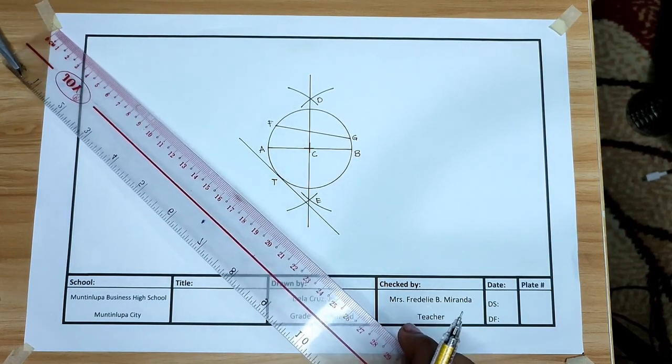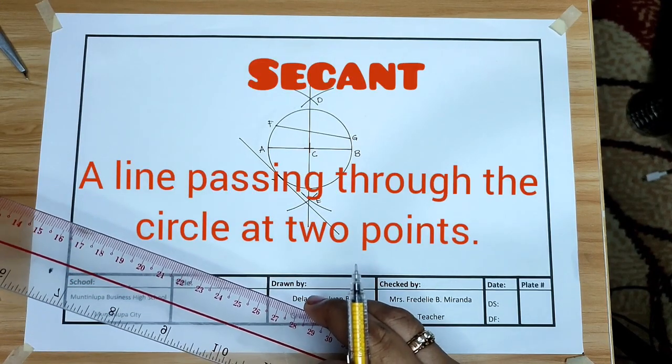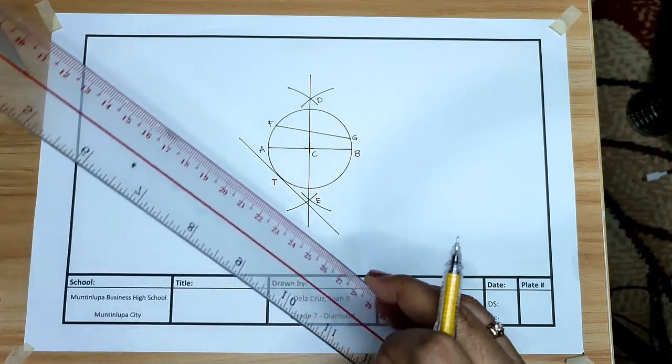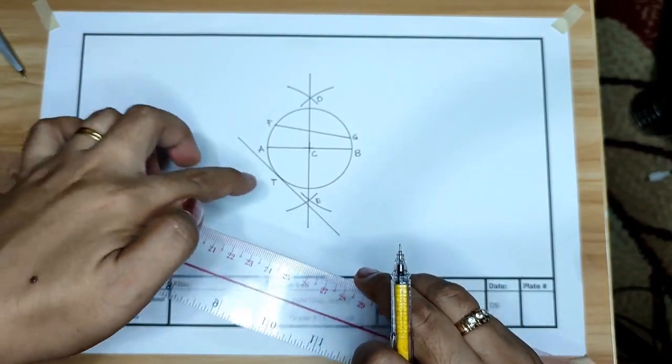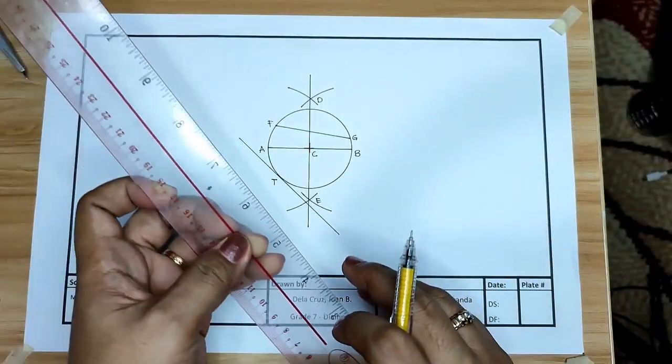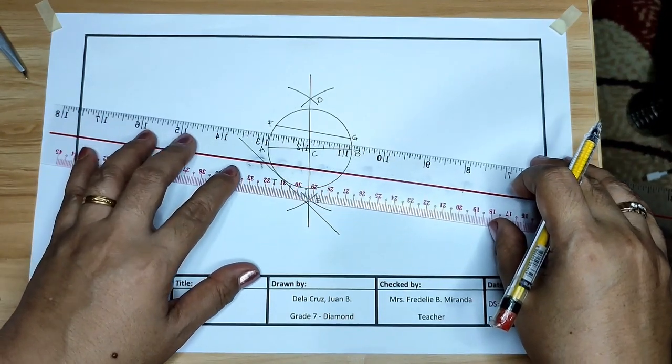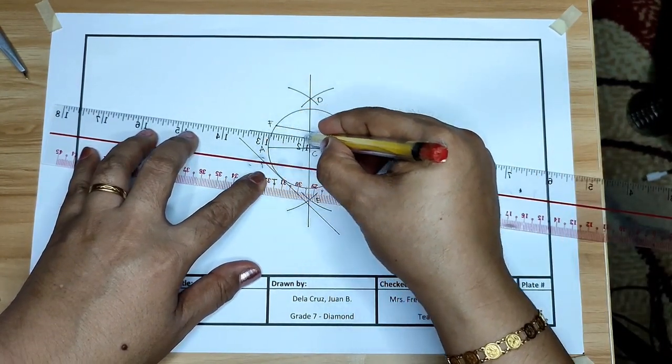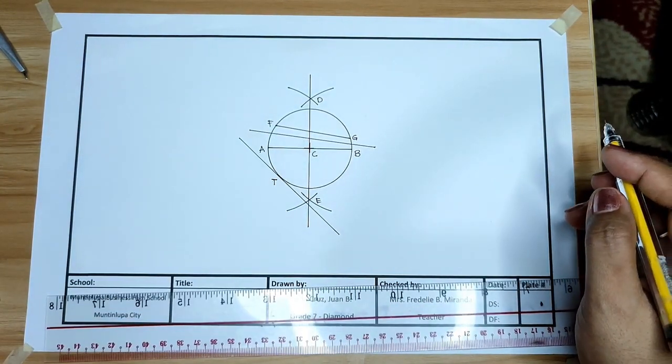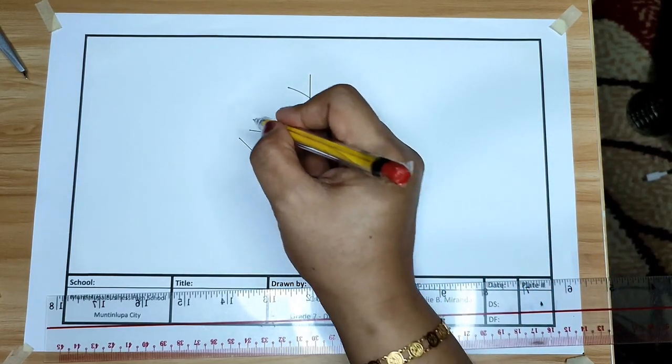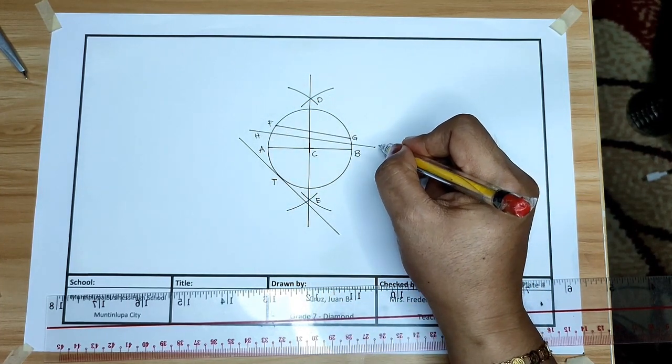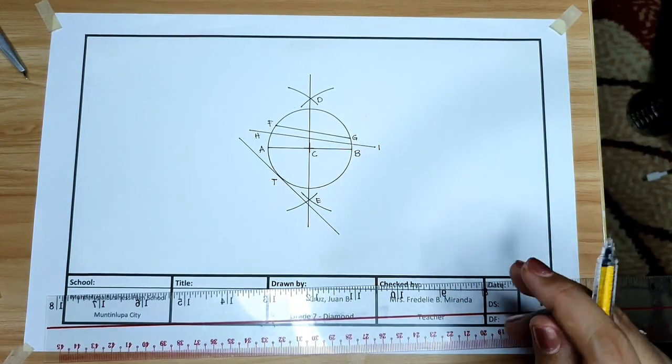Next is secant. A line passing through the circle at two points. Passing through. When you say passing through, it not only touches the circumference, it should pass through. Let us try this. That is secant. Let us name this H and letter I.